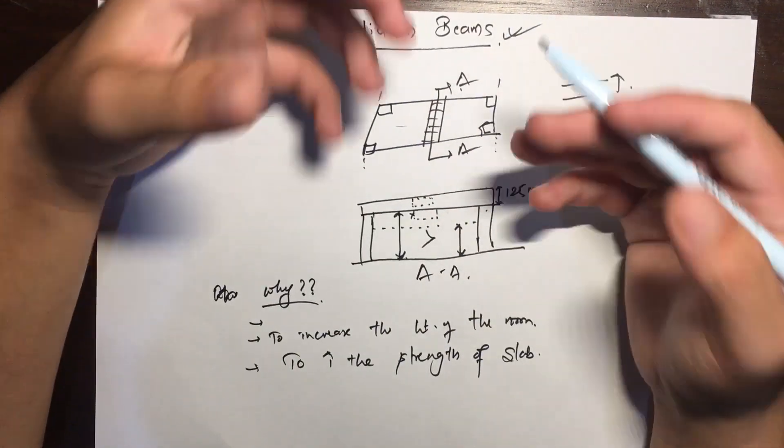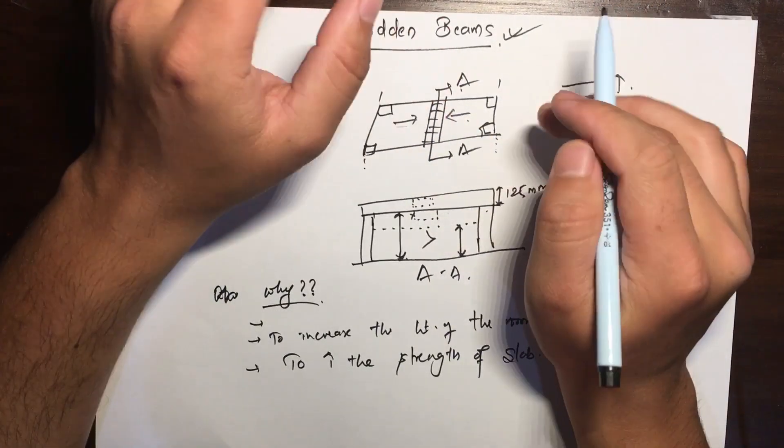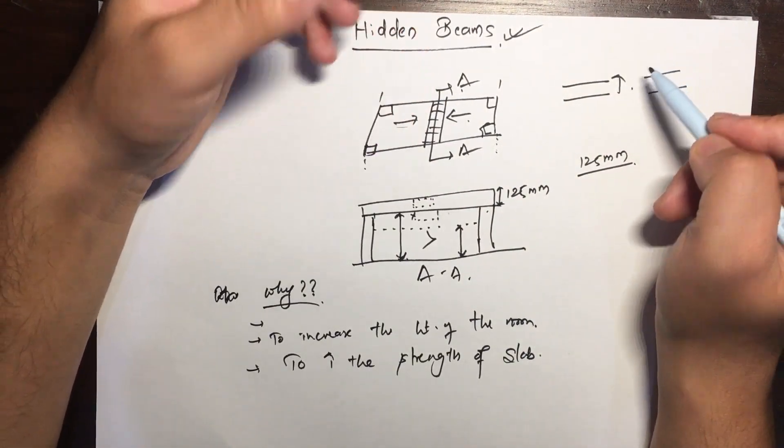You reduce the load on the slab alone by dispersing the load from the slab to the beam also. By doing this, we can take all the load on the slab without increasing the depth of the slab.